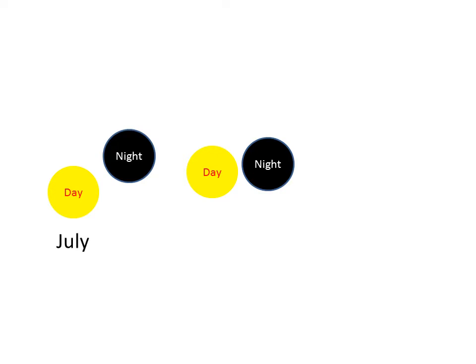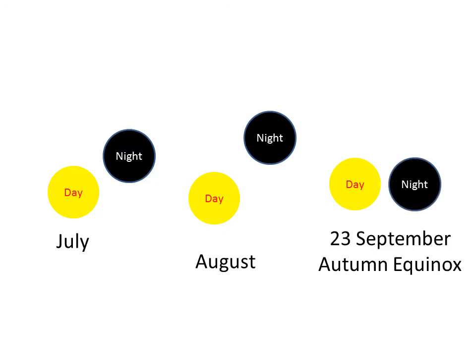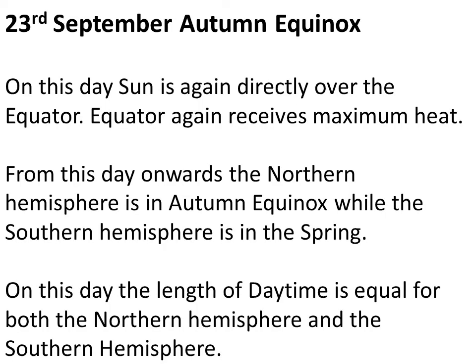We have already covered up to 21st June. On 21st June, day was maximum and night was minimum. After this day, again very slowly, days will become shorter and nights will become longer. It will continue through July and August. Then comes September, and again the day will come when day and night will be equal. It happens on 23rd September, and it is called Autumn Equinox.